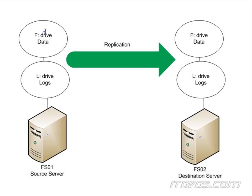So if something happens to this drive or this server — let's say the server crashes and we can't get it back up — we can make this drive active on FS02 and we'll have all of our data. Because it's constantly being written: as changes are made at the block level on the F drive of FS01, they're constantly being written over to the F drive on FS02.